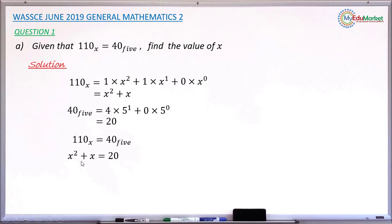So I will now solve this equation. This equation is quadratic because the highest power here is 2. So taking the 20 to the left-hand side, you have x squared plus x minus 20 equals 0.